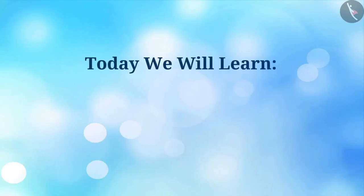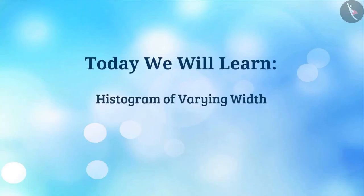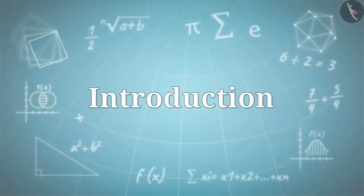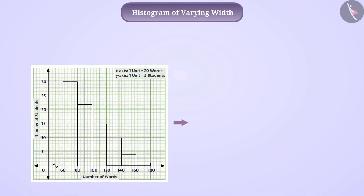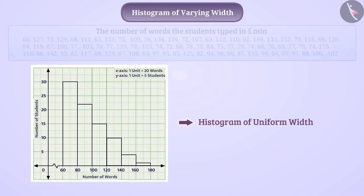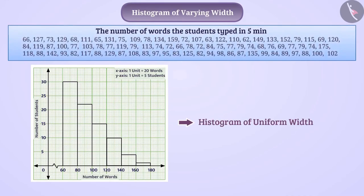Today we will learn about histograms of varying width. In the previous video we learned about the histogram of uniform width, in which we represented the number of words the students typed in five minutes as a histogram of the same width.